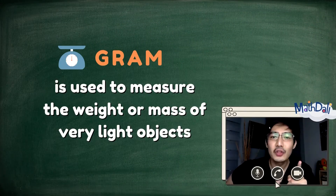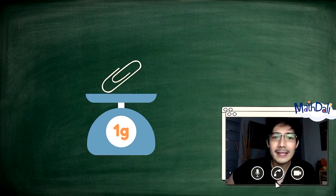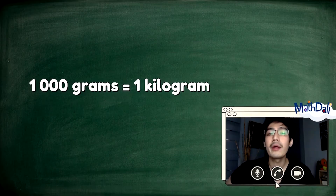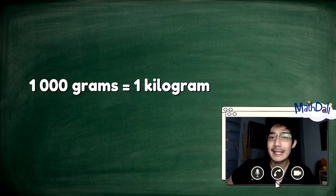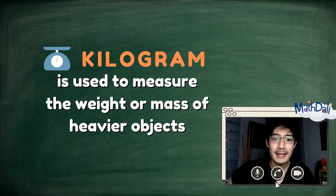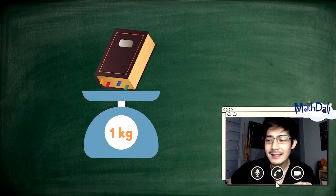A gram is used to measure the weight or mass of very light objects. G is short for gram. Kapag nagkaroon na tayo ng 1,000 grams, that's the only time when we have a kilogram. 1 kilogram, dahil 1,000 grams is equal to 1 kilogram. Kung ang gram ay G, ang kilogram naman ay KG — that's the short term of kilogram. Ginagamit natin ang kilogram to measure the weight or mass of heavier objects. Yung dictionary is about 1 kilogram.